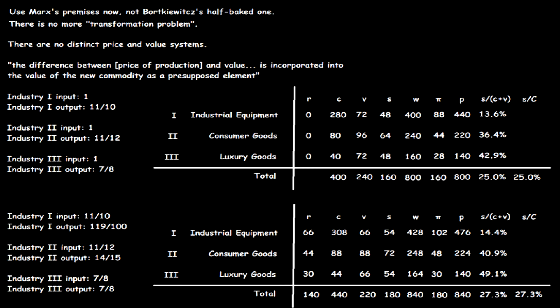The end of one period is the start of the next, so the output prices of one period necessarily equal the input prices of the next period. Once this is recognized, Bortkiewicz's proofs immediately fail. Recall that the physical quantities are the same in both periods. This means that simple reproduction does occur. The reason why the value magnitudes change is that period 1's inputs are bought at their values, but period 2's inputs are bought at prices that differ from these values — the prices of production that prevail at the end of period 1.